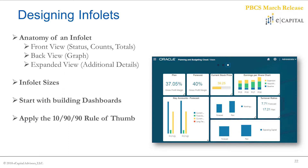The first section is the front view, which includes things like meaningful metrics, status, counts, or totals within your application. The back view is an example of graph setups to help visualize your data. The expanded view provides additional details to add on to the front view. Looking at the screenshot, all of these views together can give you a lot of different information very quickly. You can also have different infolet sizes — one by one, one by three, and other sizes — so you can build the infolet that makes the most sense for your organization.